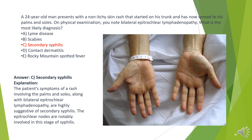The answer is C. Secondary syphilis. The patient's symptoms of a rash involving the palms and soles, along with bilateral epitrochlear lymphadenopathy, are highly suggestive of secondary syphilis. The epitrochlear nodes are notably involved in this stage of syphilis.